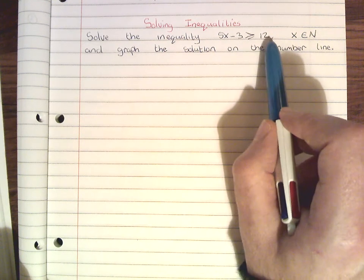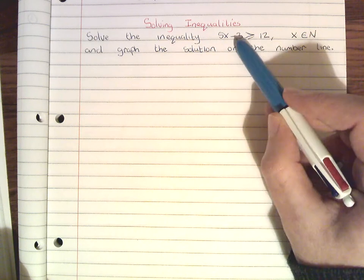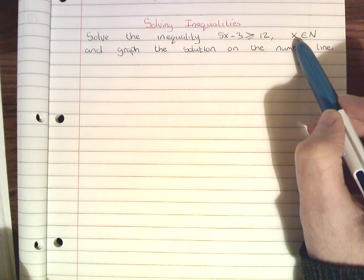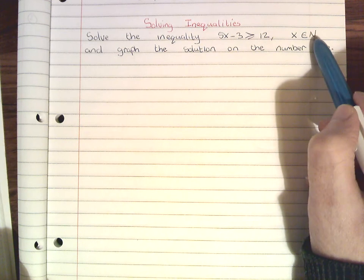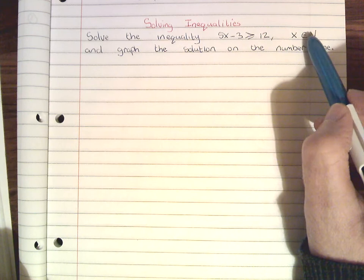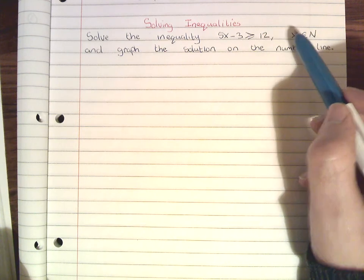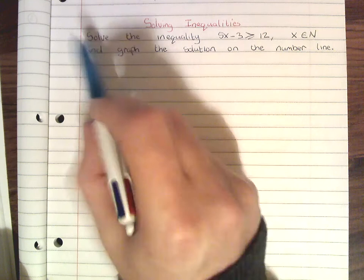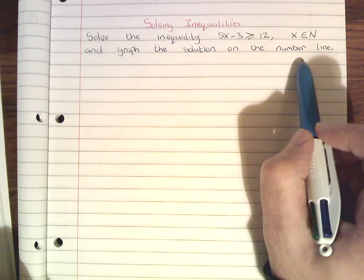...is greater than or equal to 12. It tells us that when we solve for x, the answer is going to be an element of ℕ — the natural numbers. There will be more than one x value. It also asks us to graph the solution on a number line.